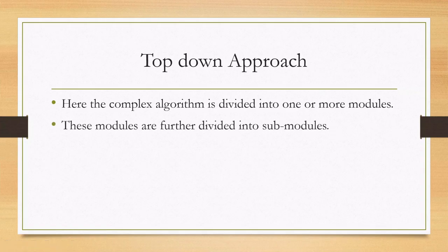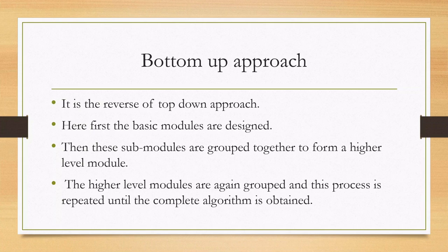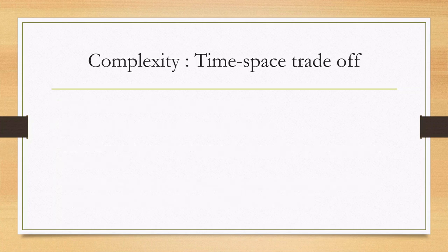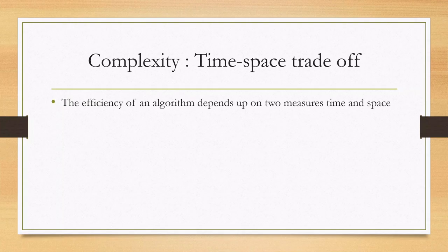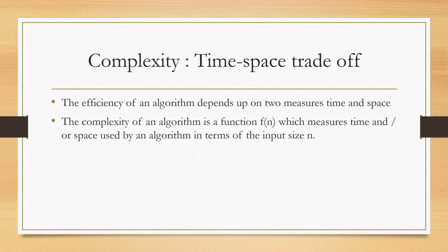Now we will see the complexity of an algorithm, that is, the time-space trade-off. The complexity or efficiency of an algorithm depends on two measures: time and space. The complexity of an algorithm is represented as a function f(n), which measures the time and/or the space required by an algorithm in terms of the input size n. If we have 10 elements to be processed, the time taken and the space needed to store those elements determine the complexity or efficiency of an algorithm.